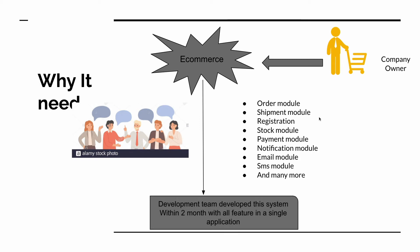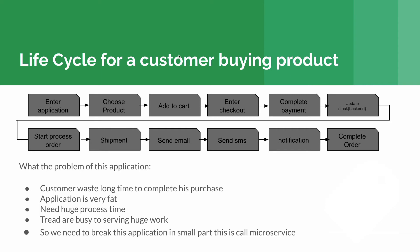After internal discussion, the project manager and development team tell the management team they need two months to complete all the features in the application. Everything seems great — the management, business team, and development team are all very excited because they are delivering something new in a short time. The business team is very happy hearing that all features will be completed within two months.